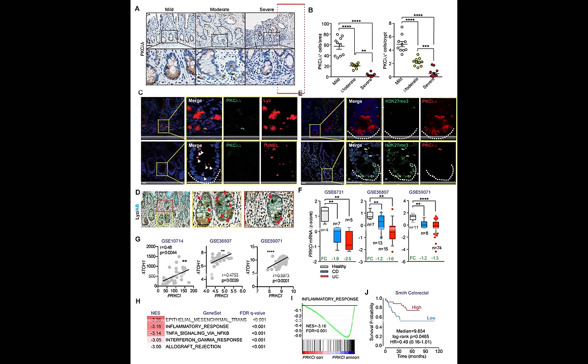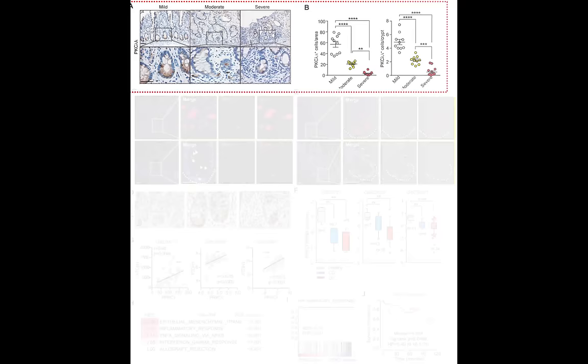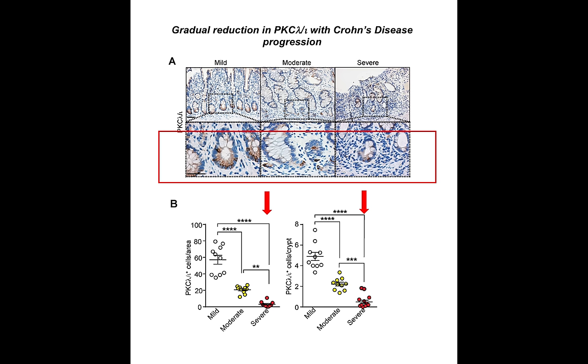Panels A and B show the level of PKC iota expression in intestinal sections from patients with Crohn's disease. Importantly, there was a gradual reduction in PKC iota with Crohn's disease progression, with minimal expression in the most severe group.